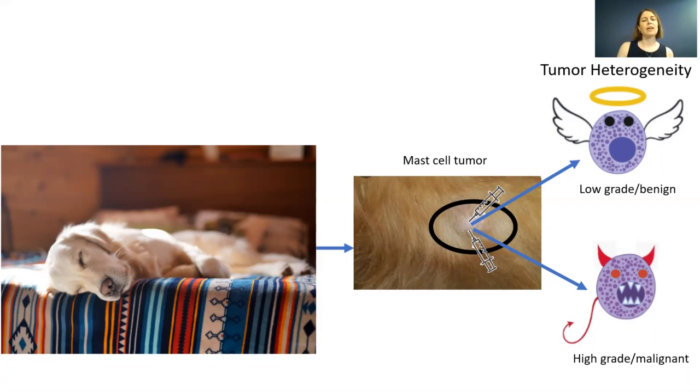In a nutshell, tumor heterogeneity means that if I poke a tumor in two different locations, I might find high-grade characteristics in one location and low-grade characteristics in another.